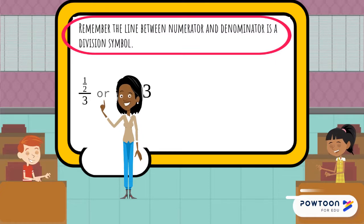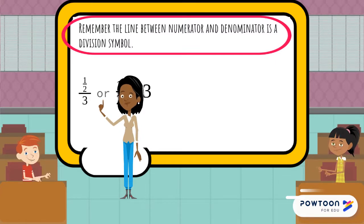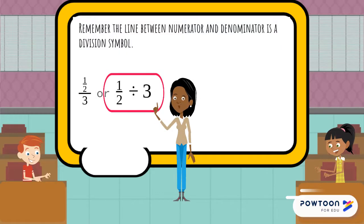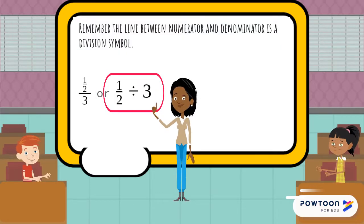Remember, the line between the numerator and denominator is just a division symbol. So, the fraction 1 half divided by 3 can be rewritten as 1 half divided by 3 using an alternate division symbol.